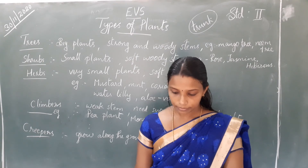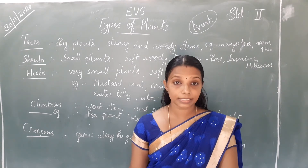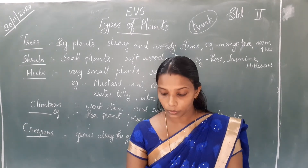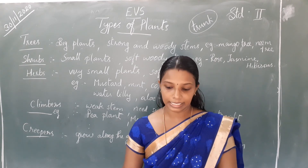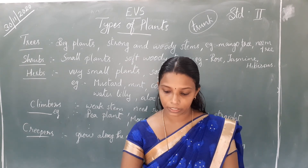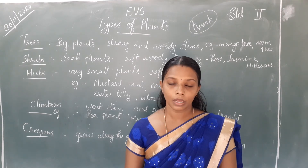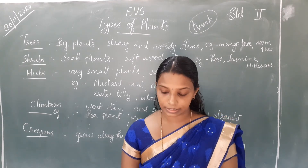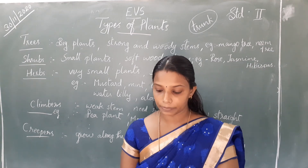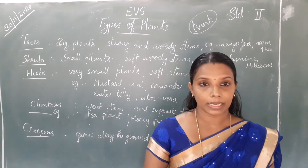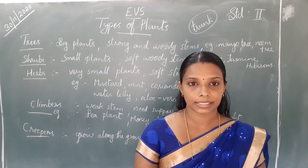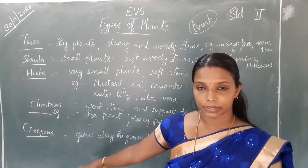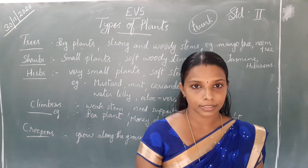Creepers grow along the ground and cannot stand straight because they have a very weak stem. Examples of creepers are pumpkin, watermelon, and cucumber. All of you understood?